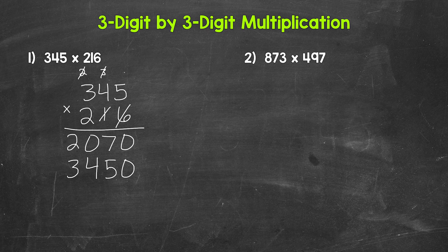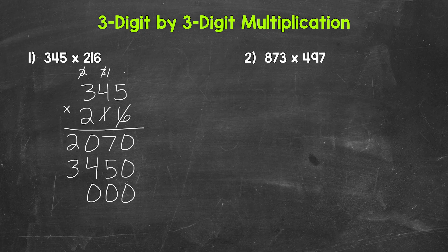Now we move over to the two in the hundreds place. That two has a value of 200, so we need two zeros. Then we can multiply. We'll start with two times five, which is 10. So we put our zero and carry the one. Then we have two times four, which is eight, plus one is nine. Then we have two times three, which is six.